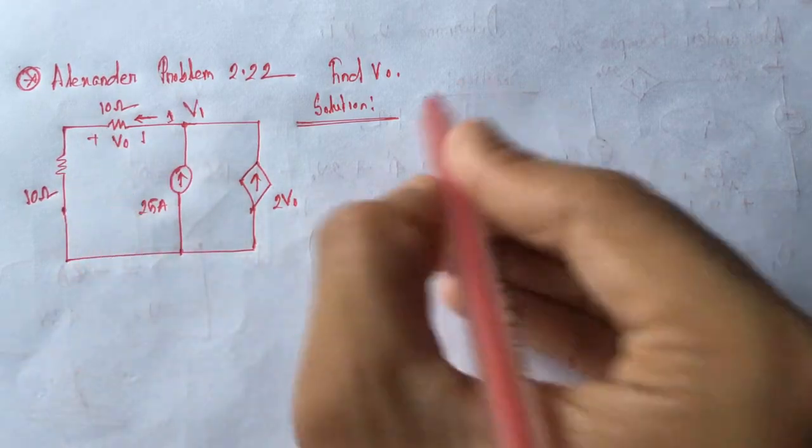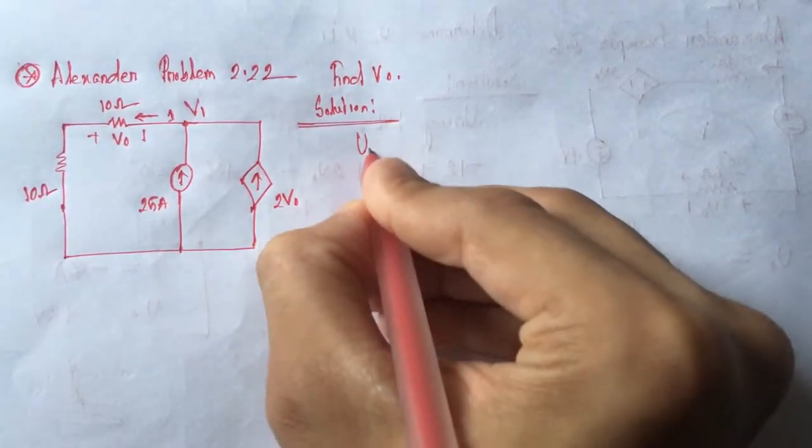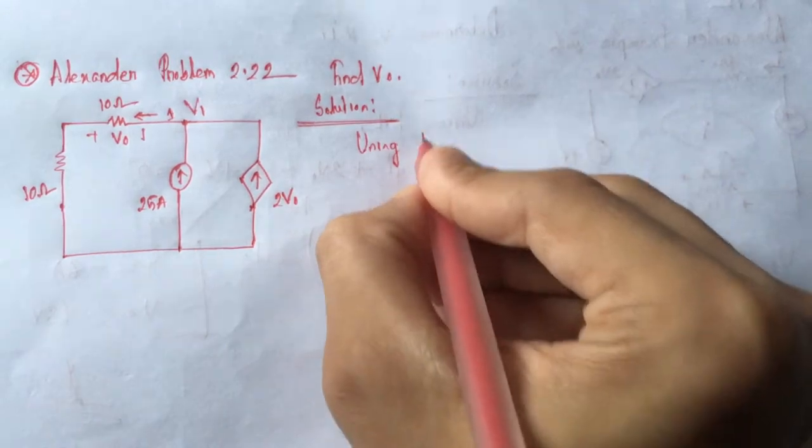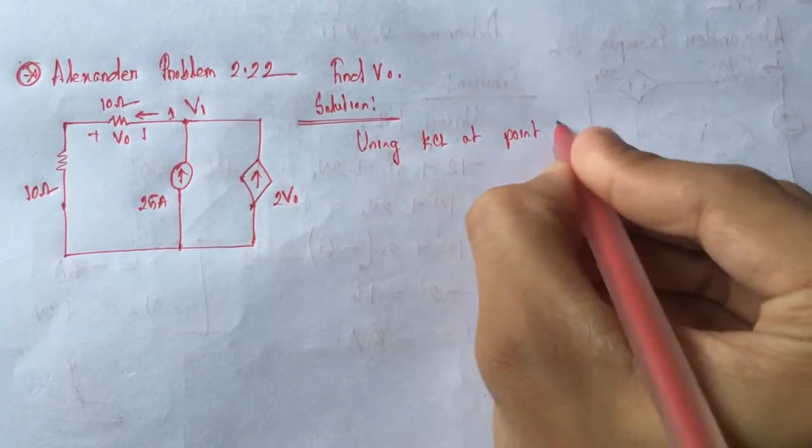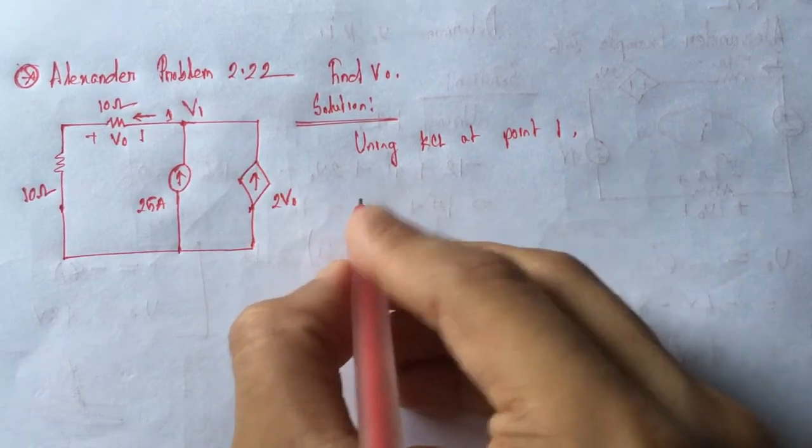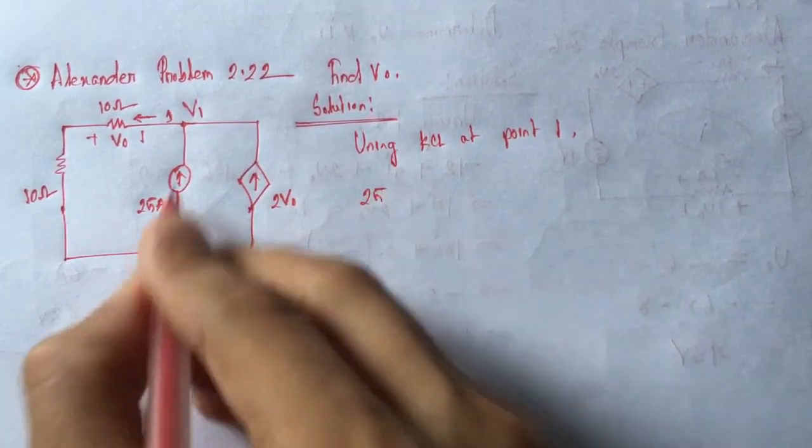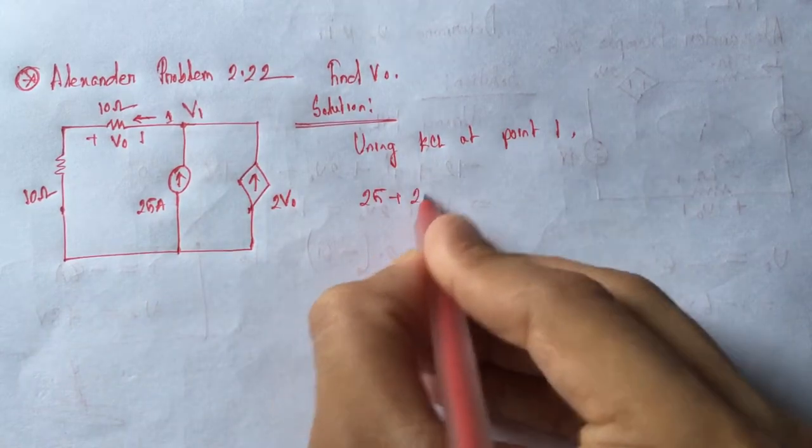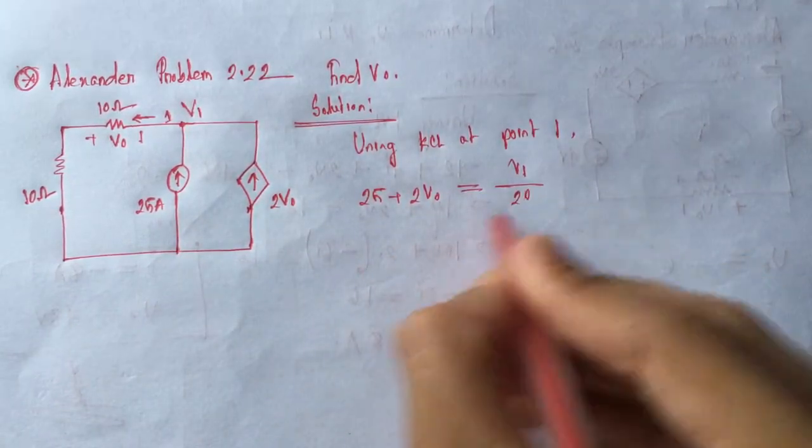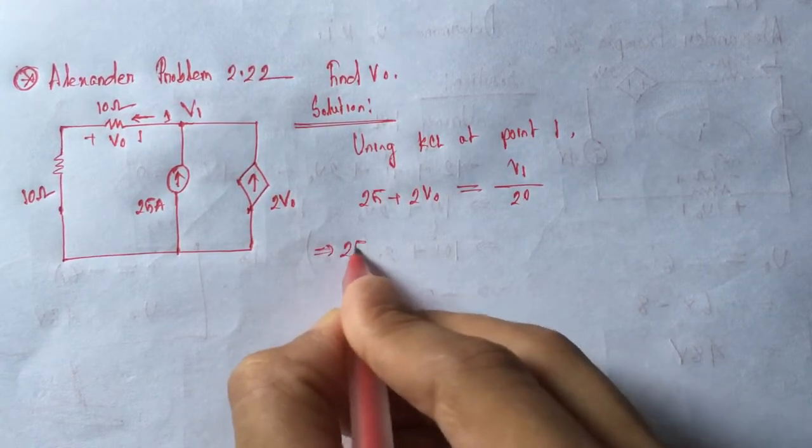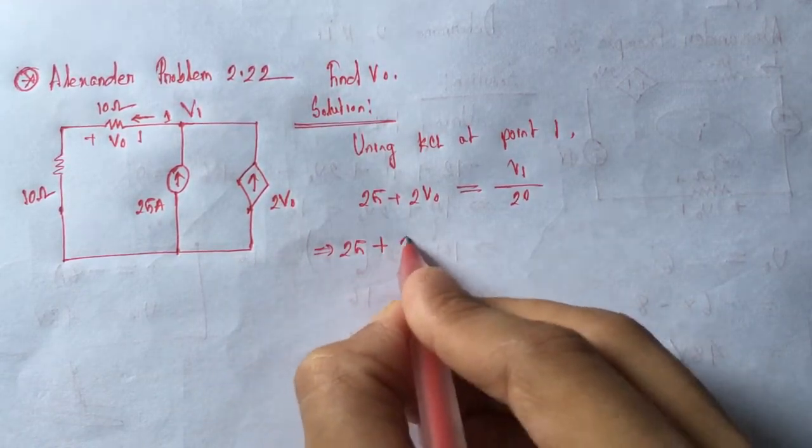Now using KCL at point 0.1, 25 plus 2V0 will be equal to V1 by 20.